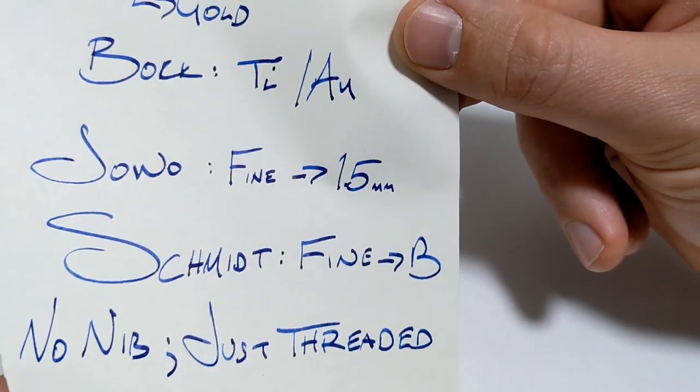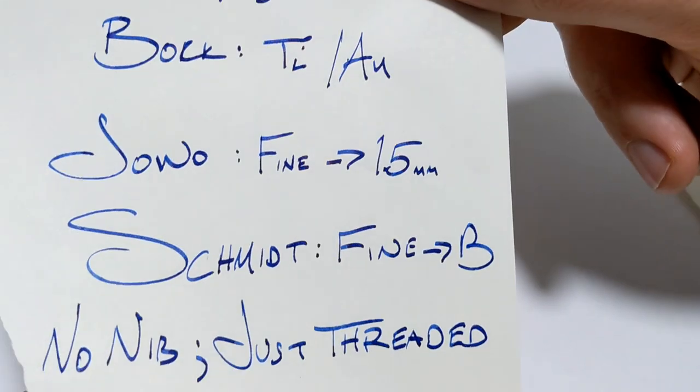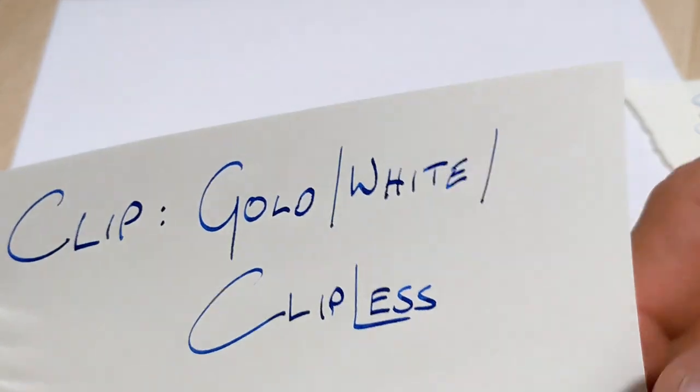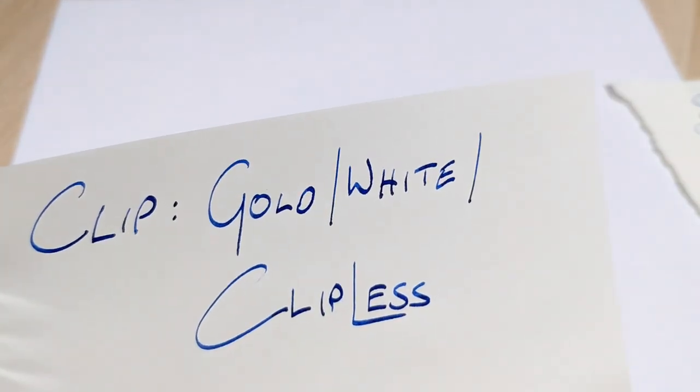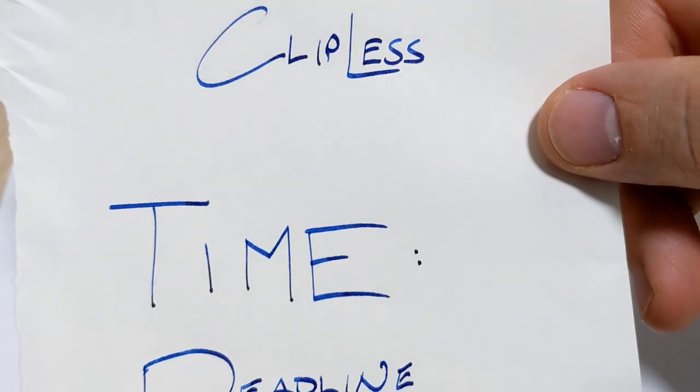They're just going to thread it for you to take either one of the above: the Bock, the Jovo/Yovo, or the Schmidt. And you can also have options even with the clip, so you can get gold, white, or son's clip. Timeframe, there's a deadline, May 31st, 2021.